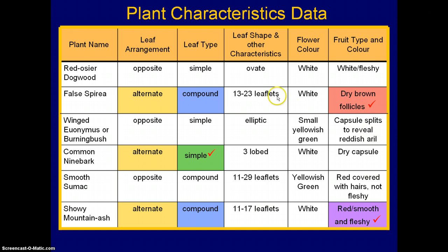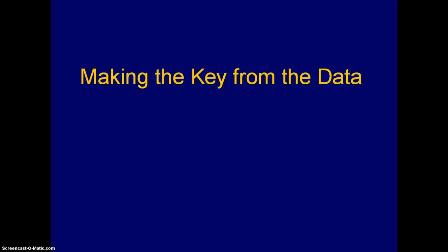Just to make sure it's understood, we could add more information such as the edges or shape of leaflets, and there are other characteristics you could build in. But in this particular example, we have enough information to identify and differentiate the plants. In the next video, we will actually make the key from this data. In this video, we were just looking at the characteristics and trying to organize the information.